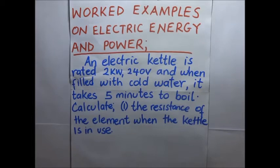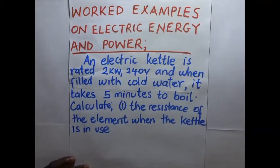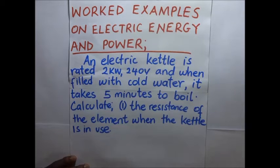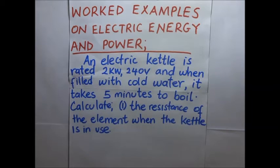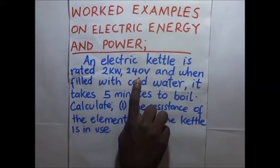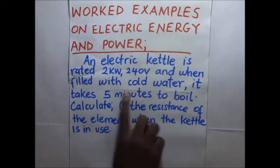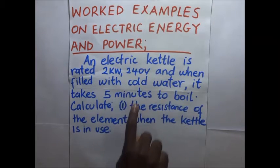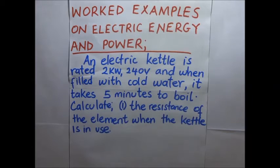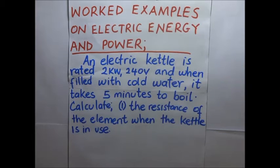Today we will be looking at worked examples on electric energy and power. Thanks for tuning in at Kisembo Academy. Let's start with the first example. An electric kettle is rated 2kW 240V, and when it's filled with cold water it takes 5 minutes to boil. Calculate the resistance of the element when the kettle is in use.